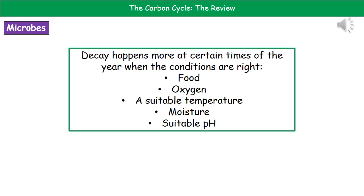Since we're talking about living things carrying out decay, what we find is that decay happens more at certain times of year, and that's all down to when the conditions are most suited to our microbes. The microbes need an available supply of food — for example, autumn provides large amounts of dead material as the leaves fall off the trees. They also need oxygen, a suitable temperature (not too hot, not too cold), a certain amount of moisture, and a suitable pH. If all of those conditions are right, then we see a very rapid rate of decay, because the microbes are able to work at their fastest rate.